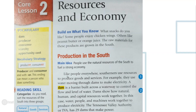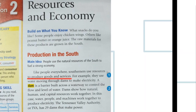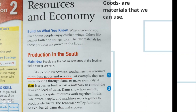Like people everywhere, southerners use resources to produce goods and services. Goods are materials that we can use — for example, a chair, books, tables, and food. Those are what we call goods. For example, they use water moving through dams to make electricity.